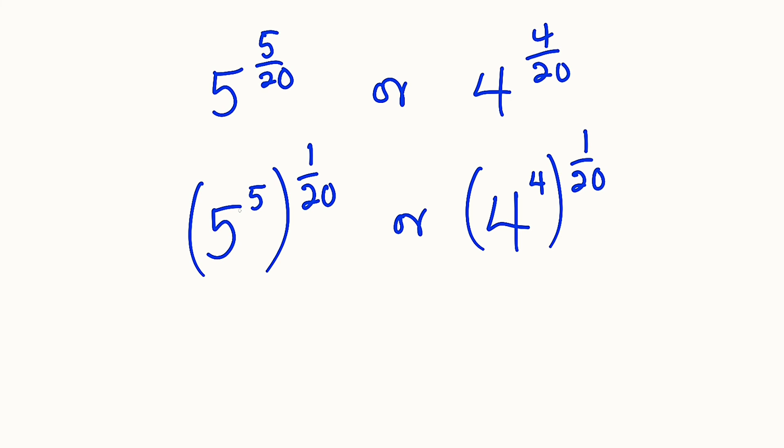Without using calculator, 5 to the power of 5 is greater than 4 to the power of 4, and hence we conclude by saying that 5 power 1 over 4 is greater than 4 power 1 over 5. And this brings us to the end of this tutorial.